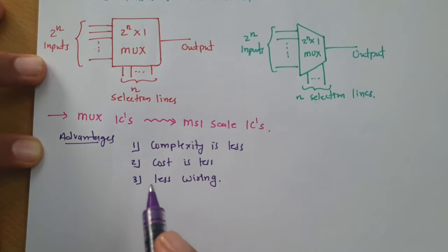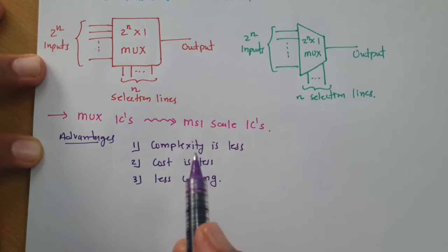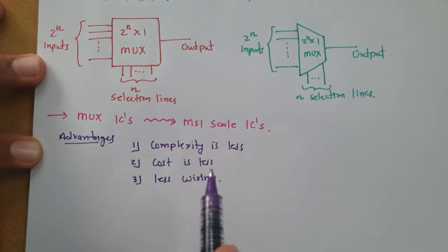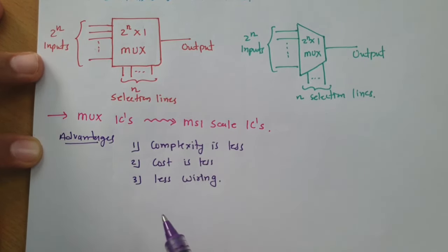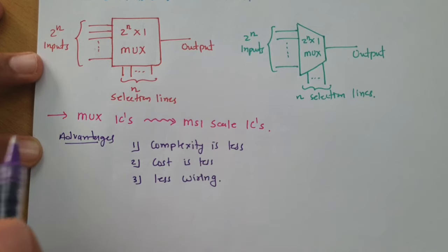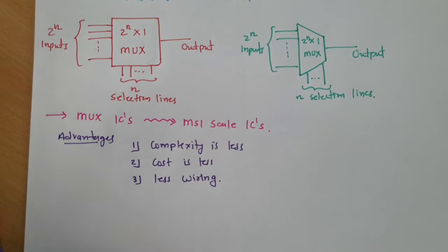These advantages — reduced complexity, reduced cost, and reduced wiring — are why multiplexers are very popular in the market.